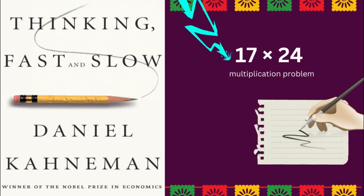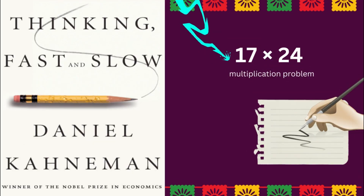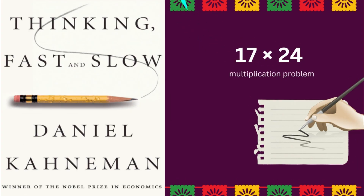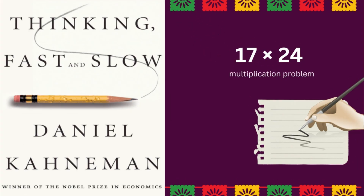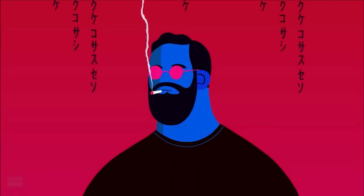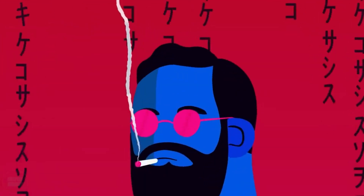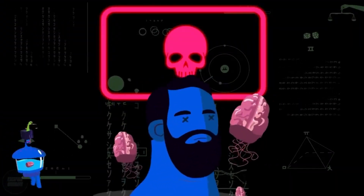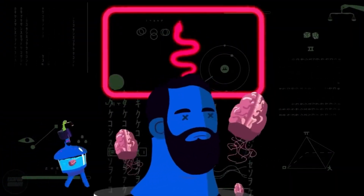Without spending some time on the problem, however, you would not be certain that the answer is not 568. A precise solution did not come to mind, and you felt that you could choose whether or not to engage in the computation. If you have not done so yet, you should attempt the multiplication problem now, completing at least part of it. You experienced slow thinking as you proceeded through a sequence of steps.